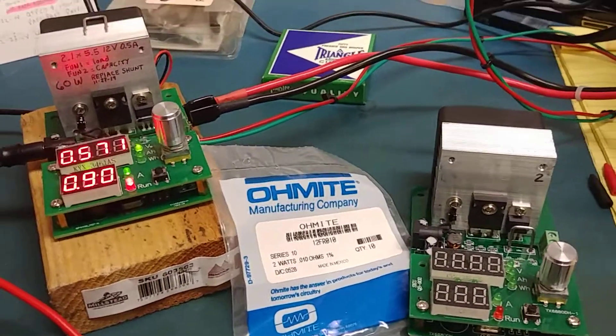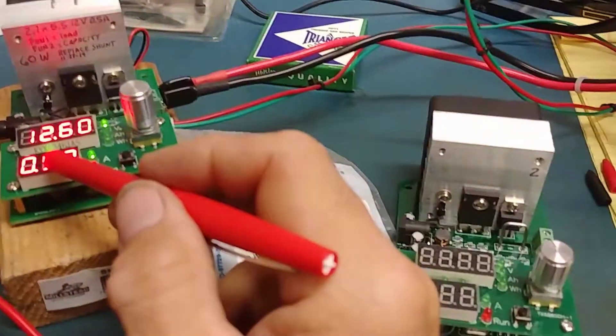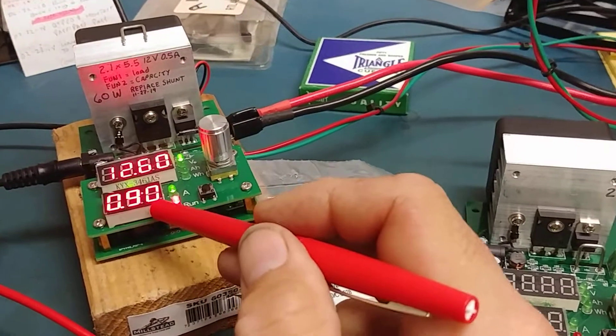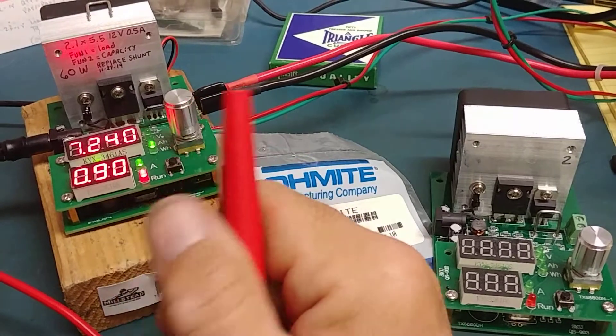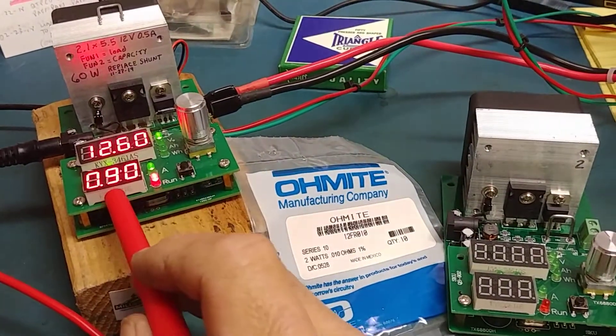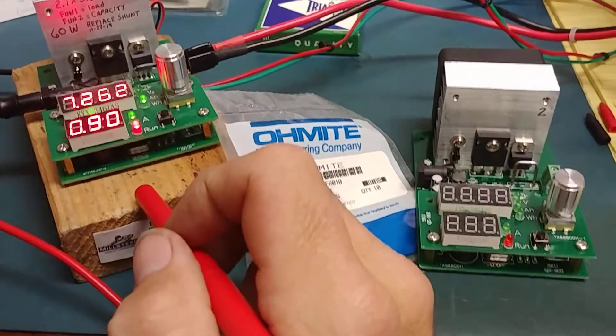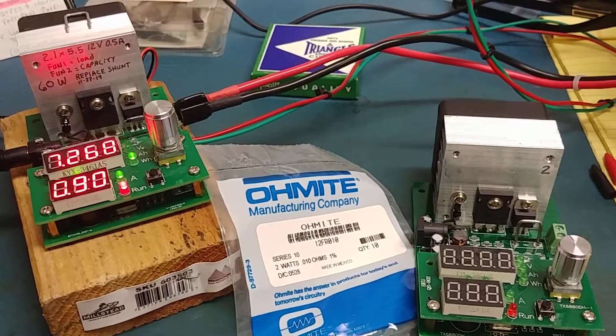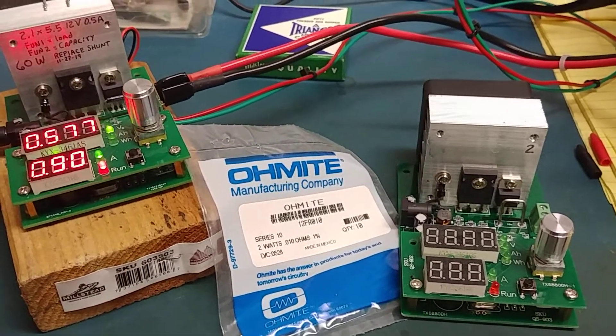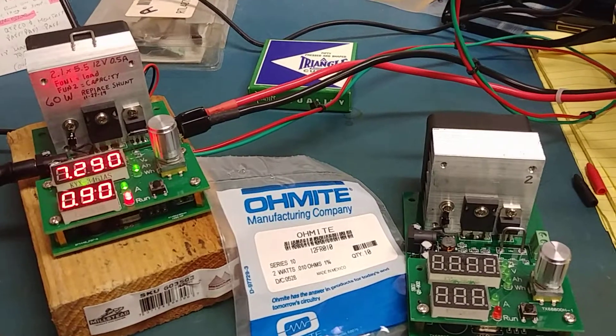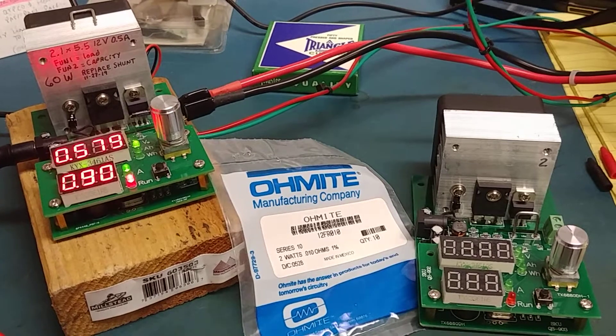The only problem that I had with them is that on the constant current draw it was not very accurate. Sometimes, like for instance on this one I have it set to 900 milliamps, and if you would check the current draw on it, it would be off sometimes as much as 50 milliamps, which when you're doing a 20 amp hour test, that's going to throw your numbers off at the end.